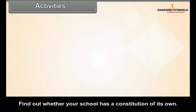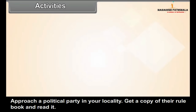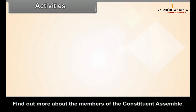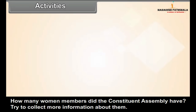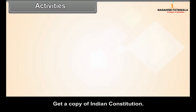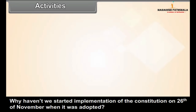Activities: Find out whether your school has a constitution of its own. Approach a political party in your locality, get a copy of their rule book and read it. Find out more about the members of the Constituent Assembly, and find out in detail about the different committees of the Constituent Assembly. Display a collection of photographs and short notes on the members of the Constituent Assembly. How many women members did the Constituent Assembly have? Try to collect more information about them. Get a copy of the Indian Constitution and prepare a constitution for your class. Why haven't we started implementation of the constitution on 26th November when it was adopted?